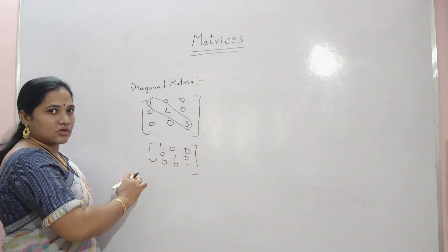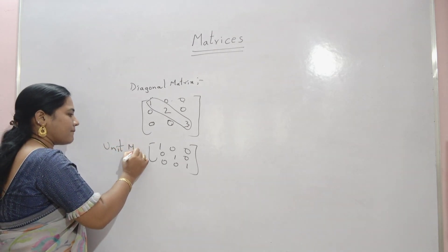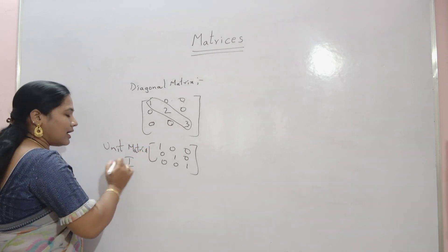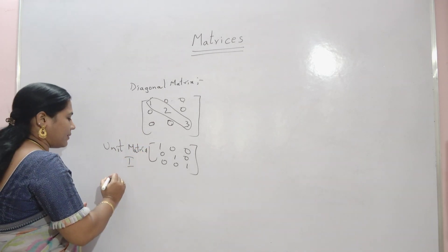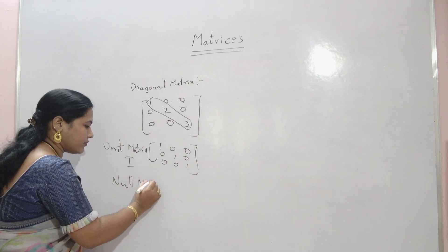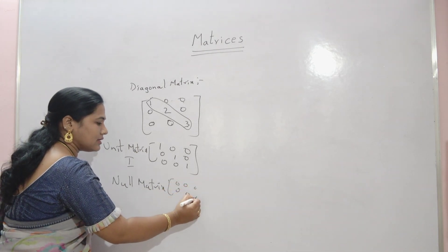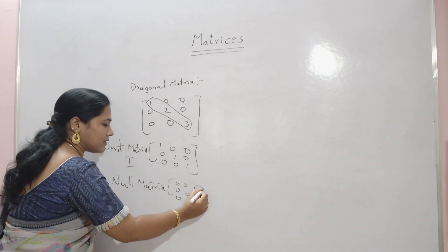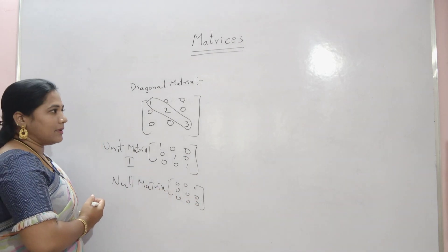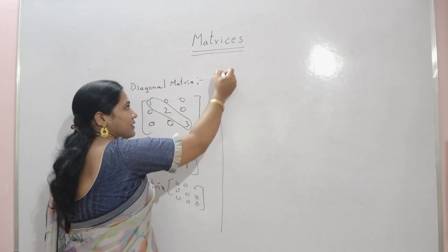The unit matrix is represented by I. Next, coming to the null matrix. If all elements in a square matrix are 0, then it is called a null matrix.